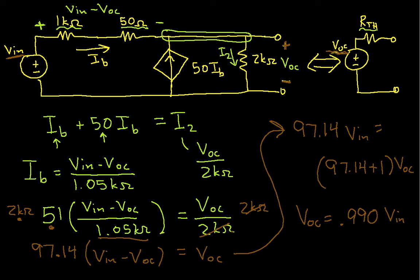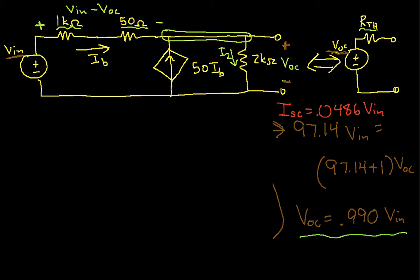We have that the short circuit current is 0.0486 times VIN. We have that the open circuit voltage is given by 0.99*VIN. So I'll just cut away some stuff here to leave some space. And we'll cut away this stuff because it's extraneous now.